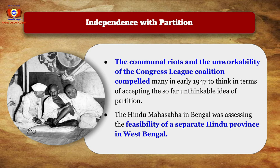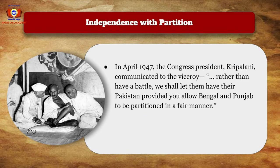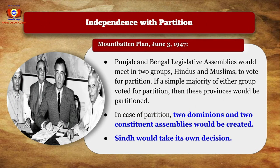The Hindu Mahasabha in Bengal was assessing the feasibility of a separate Hindu province in West Bengal. In April 1947, Congress President Kripalani communicated to the Viceroy: 'Rather than having a battle, we shall let them have Pakistan' — but demanded that Bengal and Punjab be partitioned in a fair manner.